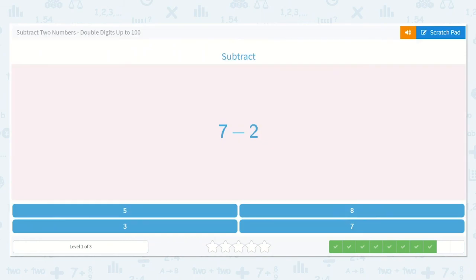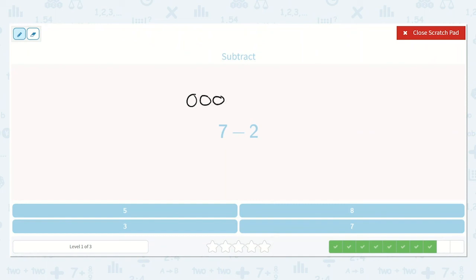Next, we have 7 minus 2. 1, 2, 3, 4, 5, 6, 7. And we take 2 of them away. 1, 2. We're left with 1, 2, 3, 4, 5. And I know that is reasonable because 5 plus 2 is 7. So 7 minus 2 would be equal to 5.